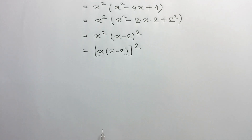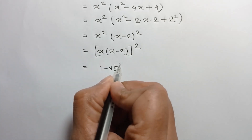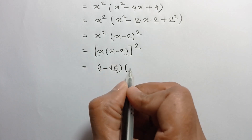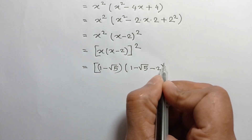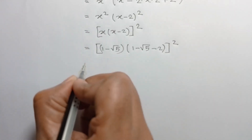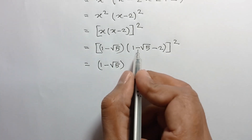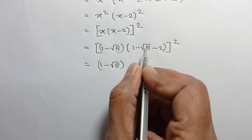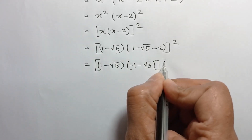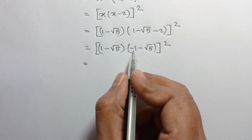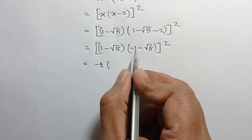Now substituting the value of x, we can write the value of x is 1 minus square root of 5, times x minus 2 whole squared. This gives us 1 minus square root of 5, times 1 minus 2, which is negative 1 minus square root of 5, whole squared.